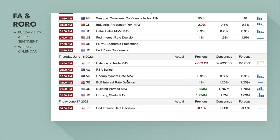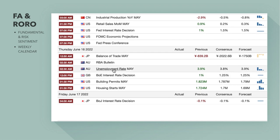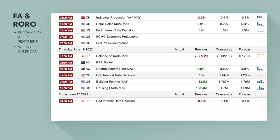CPI came out higher than expected on Friday, putting pressure on the Fed to do more and be more hawkish. I'll get into that in the in-depth chart analysis coming up. Thursday we've got the Japan balance of trade, Australia unemployment rate — no real major changes there. Then we've got the Bank of England interest rate decision. They're expected to hike 25 basis points, or 0.25%.